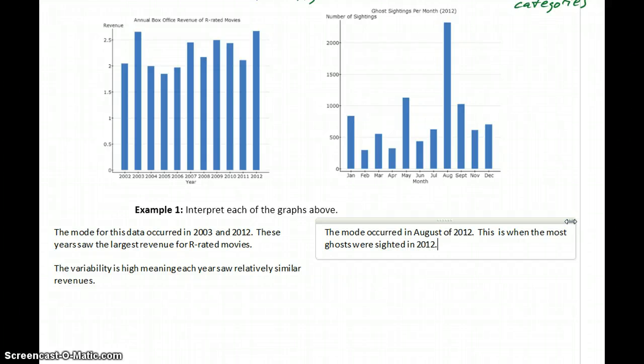And what we mean by that is that this is when the most ghosts were sighted in 2012. So we identify the mode just as, again, the tallest bar in our chart. And in the context of the data, that means that was the year that the most ghost sightings occurred, or the month in 2012 where the most ghost sightings occurred.